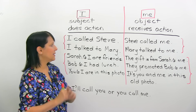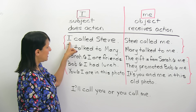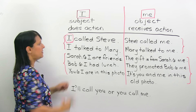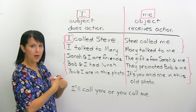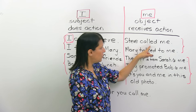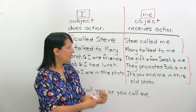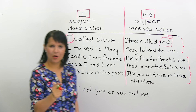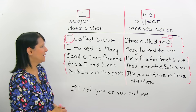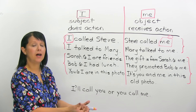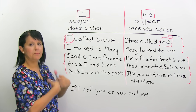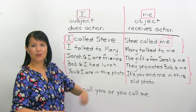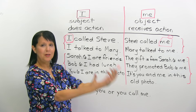To understand exactly how that works, let's look at some examples. I called Steve. I is the subject — I called, so I am doing the action. Whereas here, Steve called me. Steve is doing the action, so Steve is the subject, and me here is the object. Steve called me, so I received the action — I received the call. Here I made the call, I did the action; there I received it. I is always going to be the one that does the action; me is the one that receives the action.